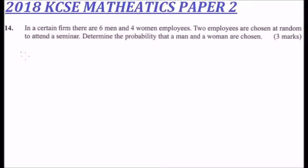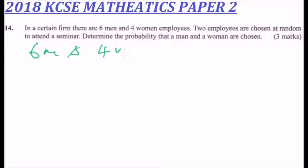In this question, we are told that in a certain firm there are six men and four women employees. Two employees are chosen at random to attend a seminar. We need to determine the probability that a man and a woman are chosen.